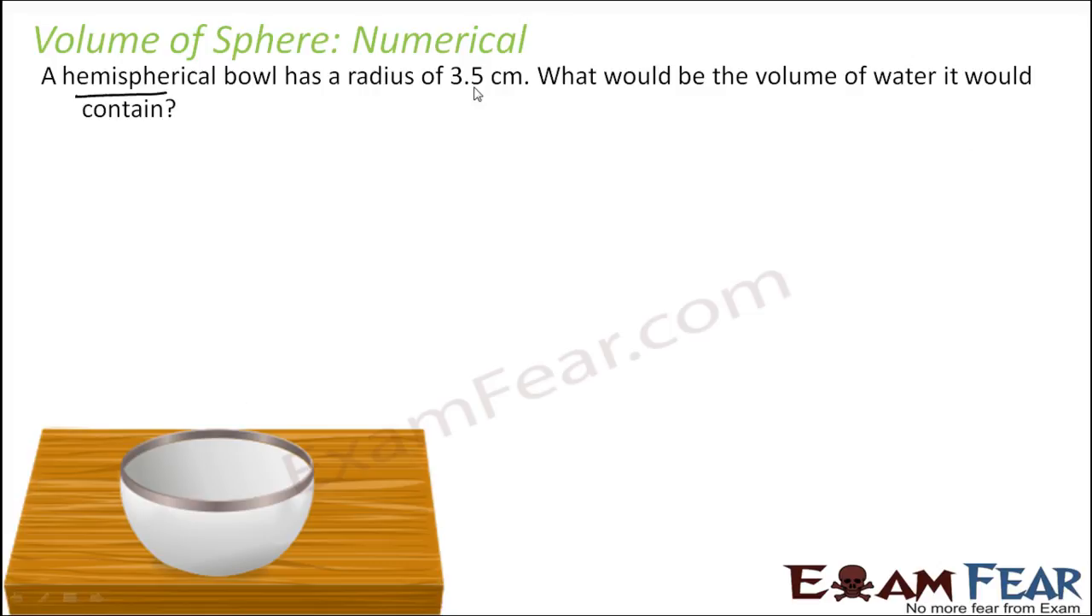Hemispherical bowl, radius 3.5 centimeter. What would be the volume of water it will contain? Volume of hemisphere is 2 by 3 pi r cube. R is given, just put the values: 2 by 3 into 22 by 7, R is 3.5 cube. It will be in centimeter cube. You solve this you get 89.8 centimeter cube. That is the volume of water it can contain.